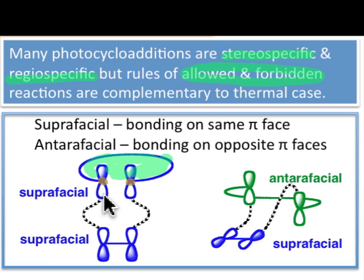in a suprafacial reaction are going to involve the lower lobe. So this reaction, the one on the left, would be suprafacial for the partner on the top and suprafacial for the partner on the bottom. We'd say this is a suprafacial plus suprafacial interaction.